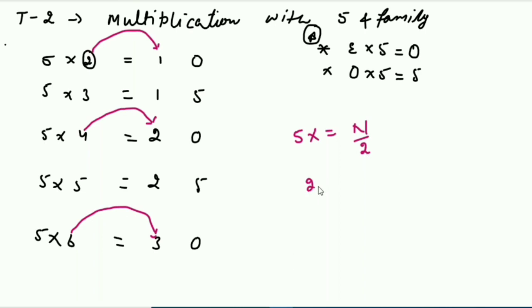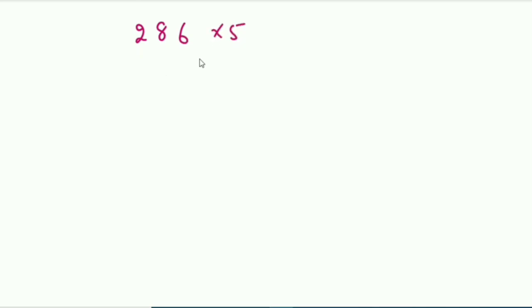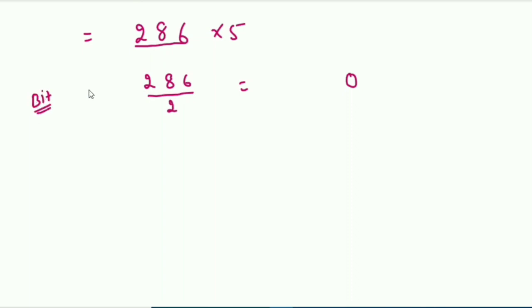Take an example: 20 into 5. Everyone knows it equals 100. So 20 divided by 2 is 10, and the answer is 100. Now I'll extend this logic to the entire family of five. For 286 multiplied by 5, don't multiply — just divide 286 by 2. The unit digit will always be zero since it's an even number. Do the division bitwise, one digit at a time — that's one operation at a time.